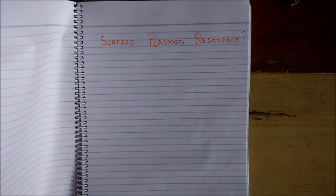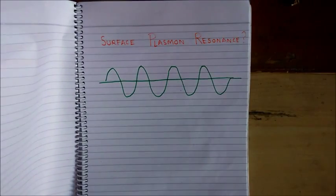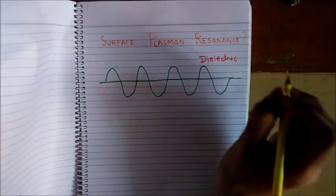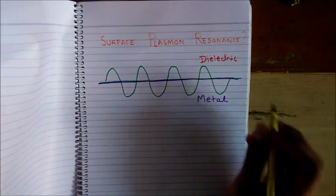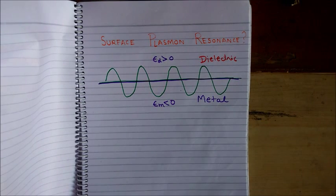Yeah sure. I'll tell you about surface plasmons. Surface plasmons are coherent delocalized electron oscillations. They exist at the interface between any two materials where the real part of dielectric constant or permittivity changes sign across the interface, such as a metal-dielectric interface.